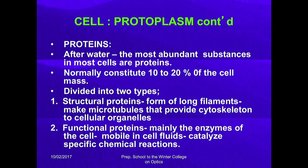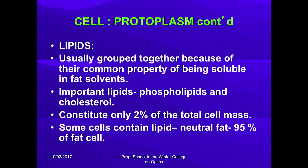Proteins are divided into two types: structural proteins and functional proteins. Structural proteins form large filaments and make microtubules that provide the cytoskeleton to cellular organelles. Functional proteins — mainly enzymes — are used by the cell for different purposes, are mobile in cell fluid, and catalyze specific chemical reactions.